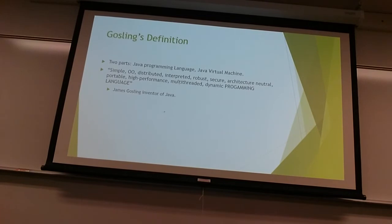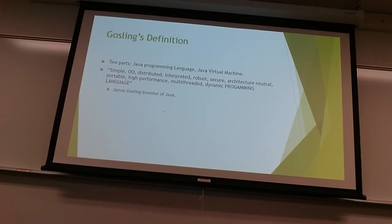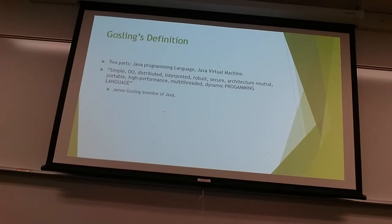Let's go ahead and get started. In this segment we're going to focus on Gosling's definition — what is he saying about Java? He created two things: the language, and a program to run the programs written with the language. It's called the Java Virtual Machine. The Java programming language is what you will be learning in this course, and the Java Virtual Machine is what you will use to run the programs you write.